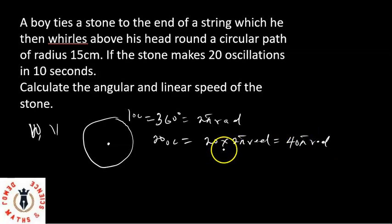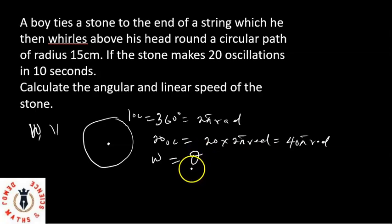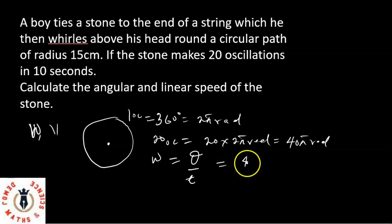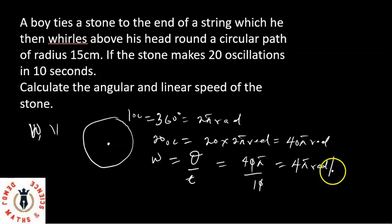That's 40 pi radians for 20 oscillations, and 20 oscillations were done in 10 seconds. My angular velocity equals theta over T — the angular displacement over time. Since the stone moved around the whole circle 20 times, my angular displacement is 40 pi radians over 10 seconds. Simplifying: 40 divided by 10 gives 4, so angular velocity equals 4 pi radians per second.